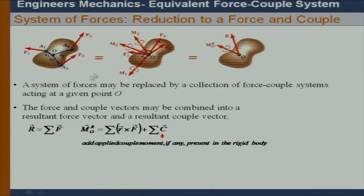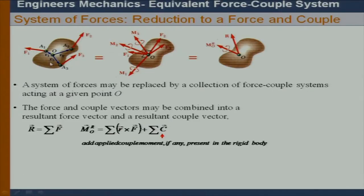The procedure is simple: the resultant force is obtained by summing all forces vectorially, and the moment resultant is simply r cross F summed over different forces. I have added an extra term C — this C is for any existing couple already applied on the body. That is a free vector which can simply be added on top of the moment resultant to get the final moment resultant vector.